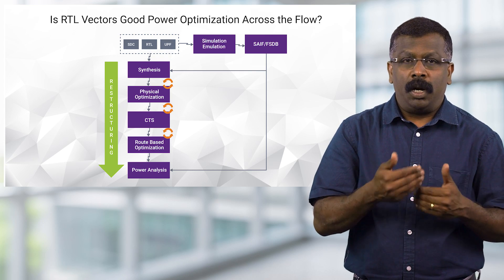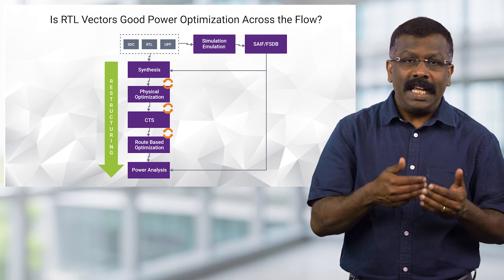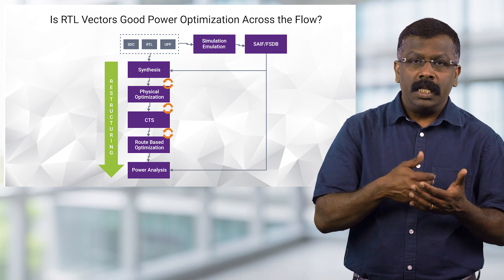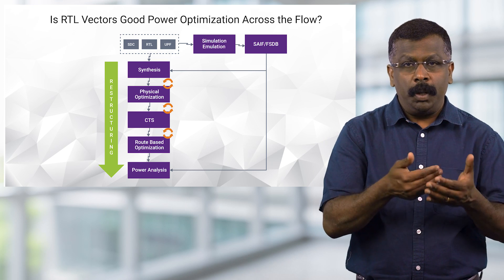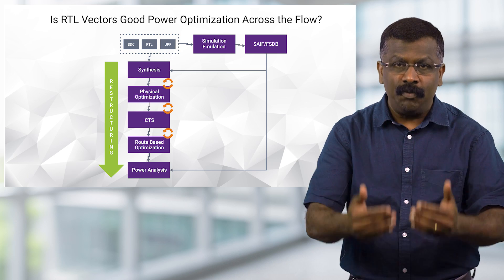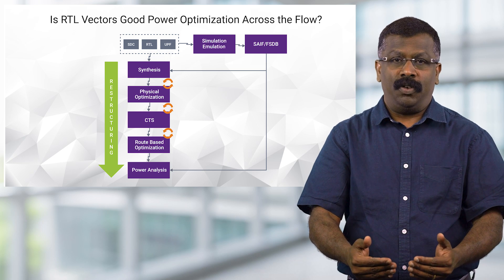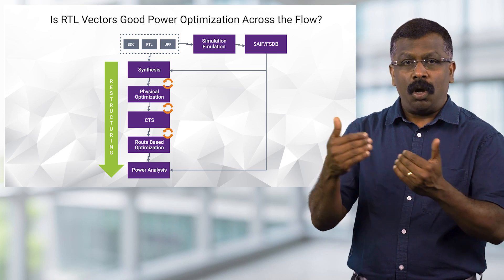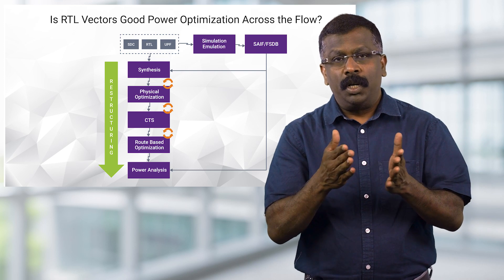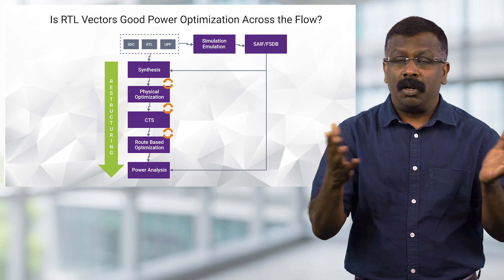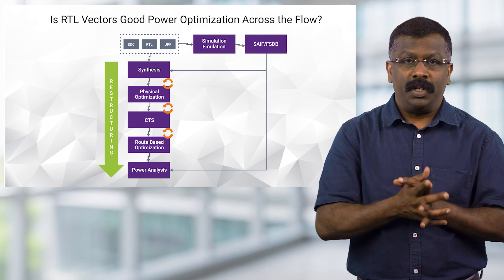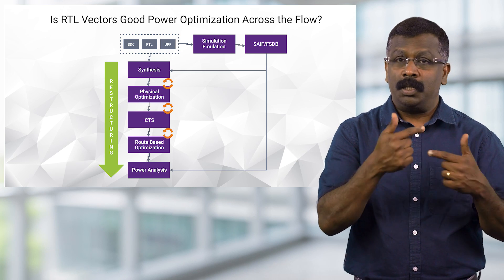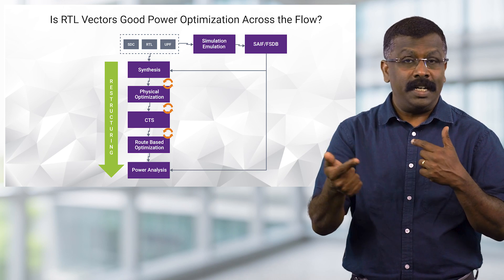Now, if you look at the typical power optimization ASIC design flow, it involves feeding RTL simulation-based stimulus and optimizing the design using the same vector throughout the flow. What we ignore most often is that RTL simulation does not capture activities across all the nodes in the design, and the design keeps changing as we go through synthesis, place and route, and ECO.